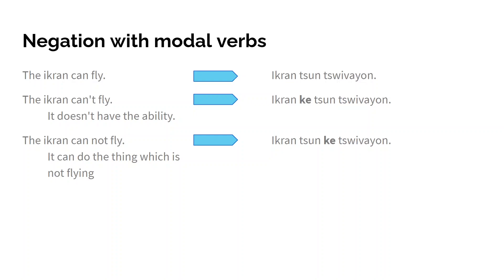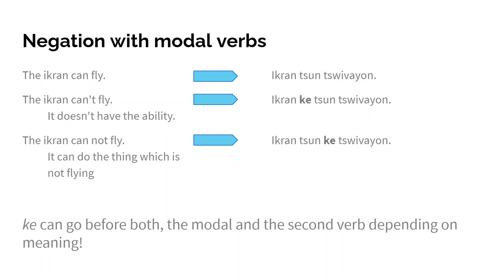In English we handle that with intonation or context, and the second meaning is of course far rarer. Usually you just mean it doesn't have the ability. But in Na'vi we can actually distinguish these two meanings. We can say 'ikran ke tsun zwayon' — it doesn't have the ability to fly. But we can also say 'ikran tsun ke zwayon' — the ikran has the ability to do the thing which is not flying. With modals, 'ke' can go before either the modal or the second verb depending on the meaning.